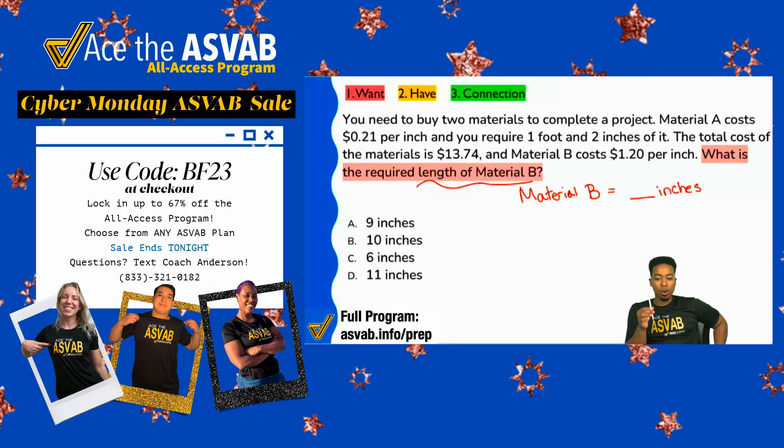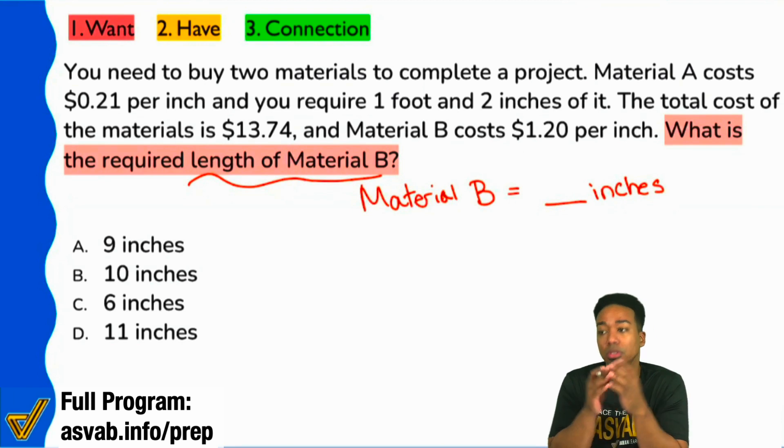From here, let's read the context because obviously if they say material B, well, we might have material A, right? So let's go ahead and understand the context, understand the information. Remember, the goal is not just to write down the numbers. Understand what the numbers mean.